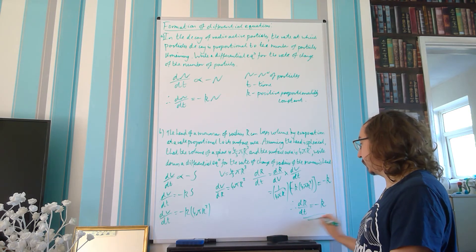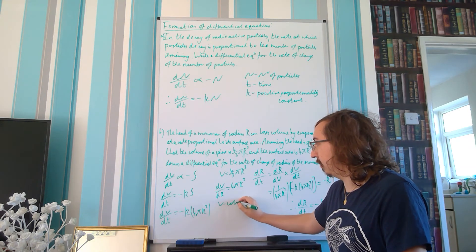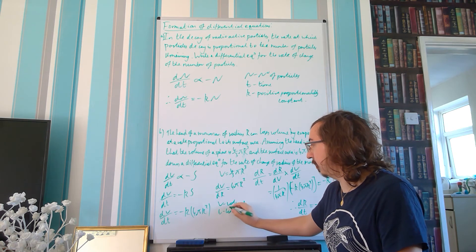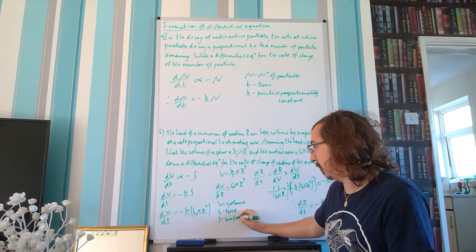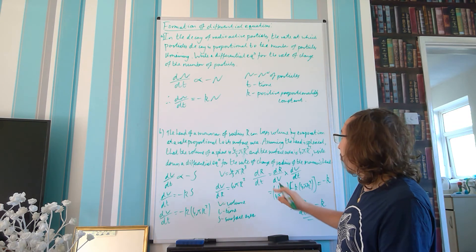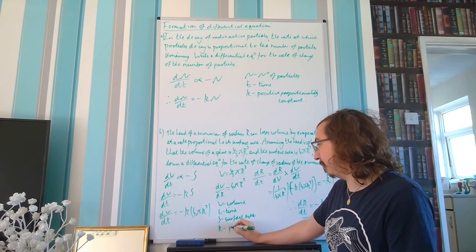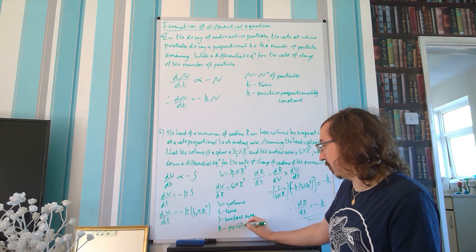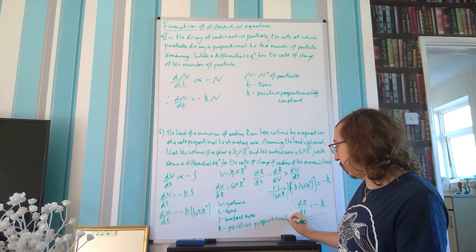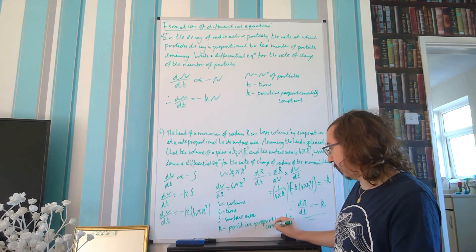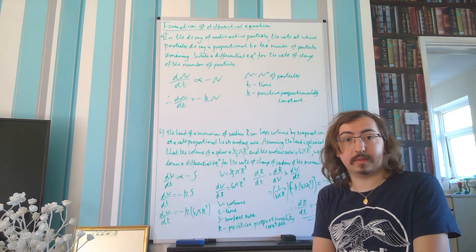The last thing to do is define the variables we've used: V for volume, t for time, S for surface area, r is already defined in the question, and K is a positive proportionality constant — it is positive because we handled the negative part by including a minus sign for the loss of volume earlier in the question.